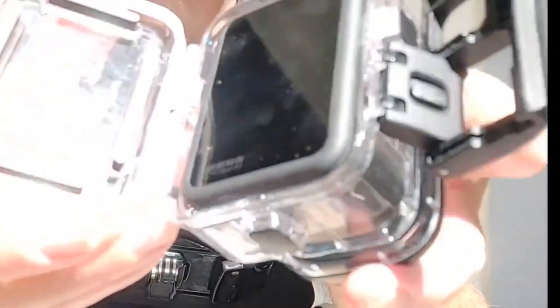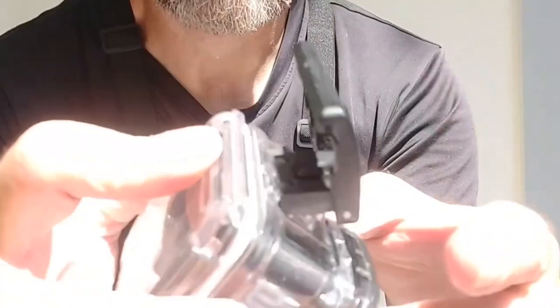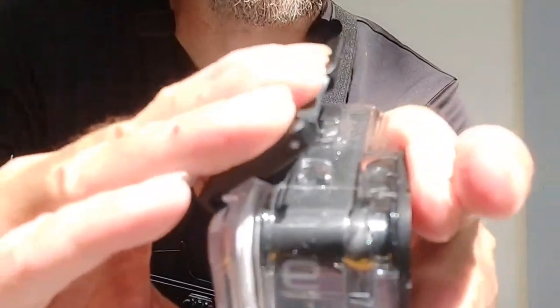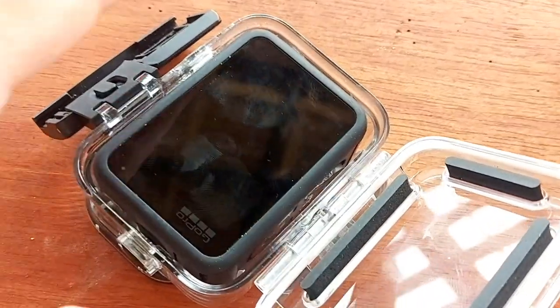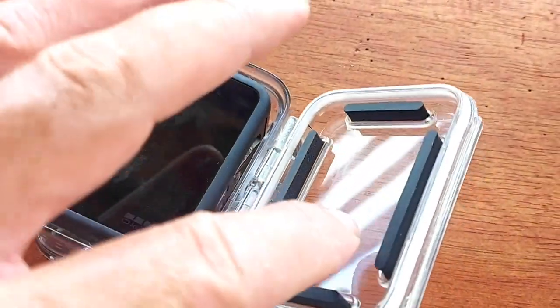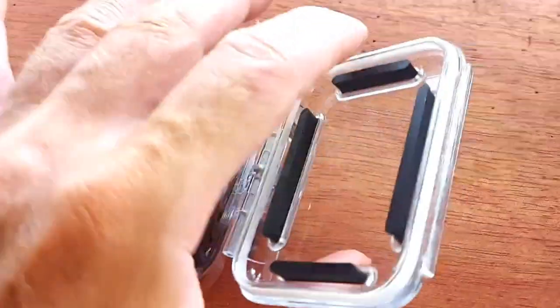To use the underwater casing, it just simply pops in like that and it has a nice perfect seal. Just lift this like that. Again, here's another view. You can see the little rubber pads. I'm really impressed about how high quality this is.